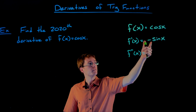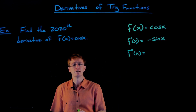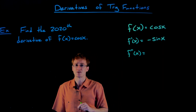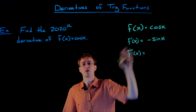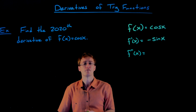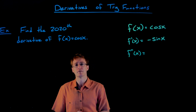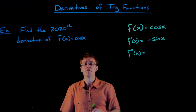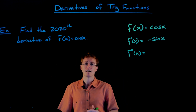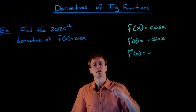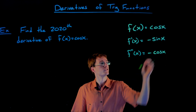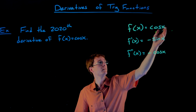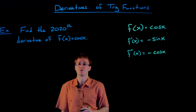If we take the derivative of our first derivative, that's how we create our second derivative. The second derivative of our cosine function is really nothing more than the first derivative of our negative sine function. The derivative of negative sine of x uses the constant multiple rule — negative 1 times the derivative of sine — and since the derivative of sine is cosine, the second derivative of cosine of x is negative cosine of x.